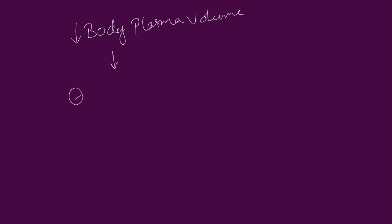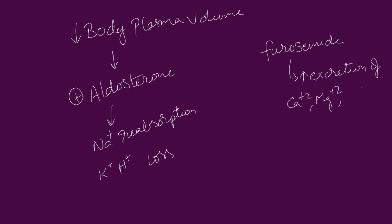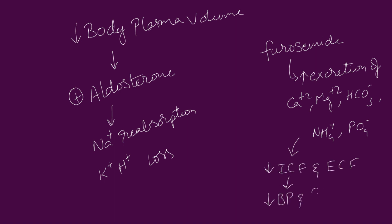As the body plasma volume decreases, aldosterone production increases, which causes sodium reabsorption and potassium and hydrogen loss. Furosemide increases excretion of calcium, magnesium, bicarbonates, ammonia and phosphates. Furosemide also reduces extracellular and intracellular fluid, which causes reduction in blood pressure and cardiac output.